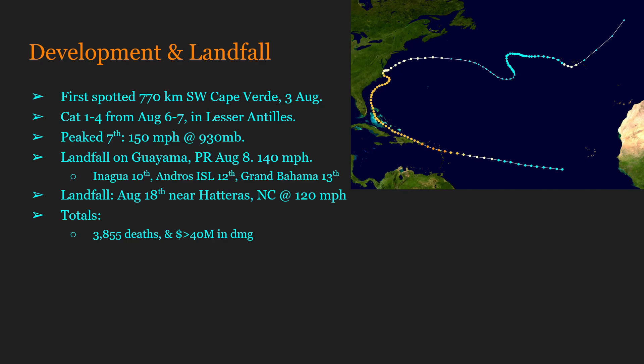In total, the San Ciriaco hurricane would cause 3,855 deaths and at least 40 million U.S. dollars in damage. Because inflation calculators only go back to 1913, I could not adjust this to 2023 dollars, although it would likely be around 10 times that figure. Damage estimates range from 38 to 40 million dollars, though one source cited 90 million — most reported 38 to 40 million, so that's what I'm going with.